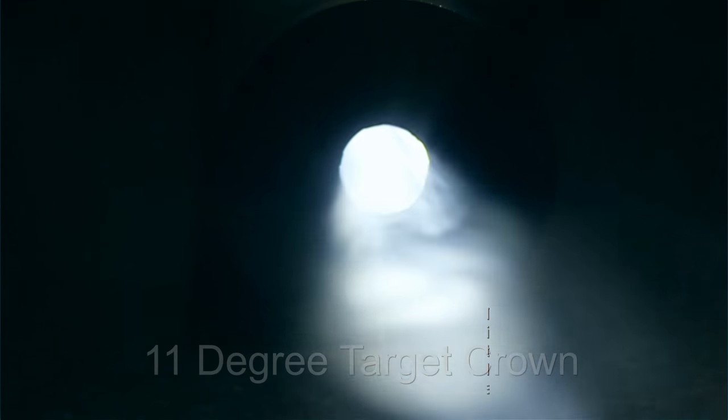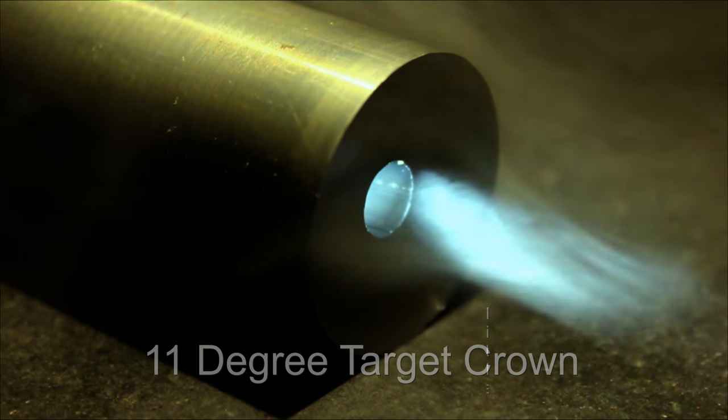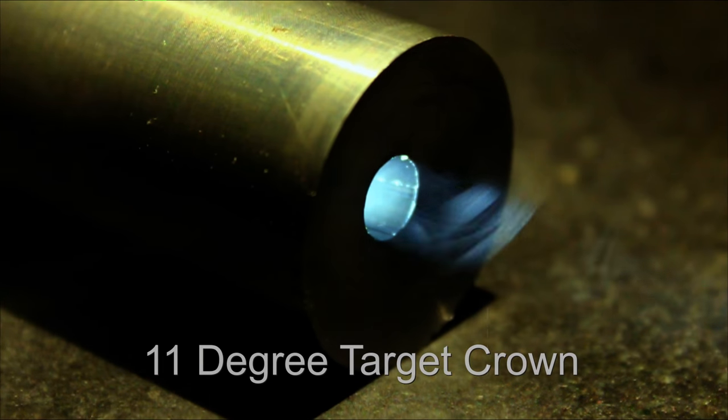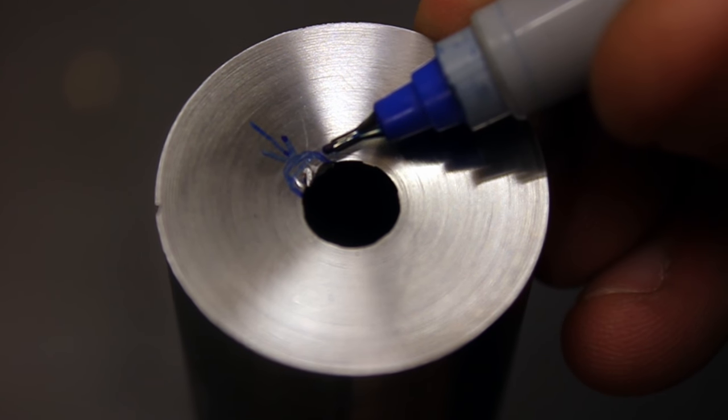The purpose of a barrel crown on a rifle is one important element in the makeup of a precision rifle. An imperfect or damaged crown can certainly cause a marked decrease in accuracy.